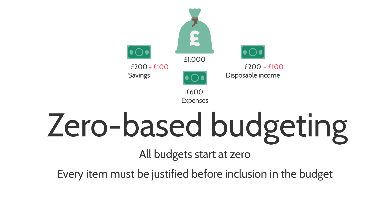Zero-based budgeting is where you assume that all budgets start at absolute zero, and before any item can be included it must be justified. So we start with zero for expenses, zero for saving, and zero for disposable income — and we have to justify everything.